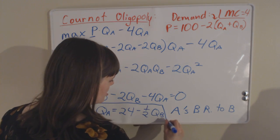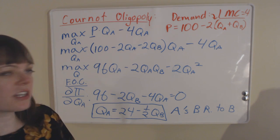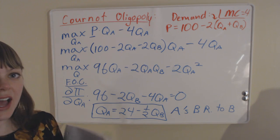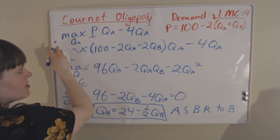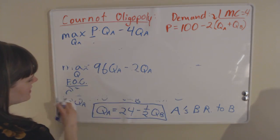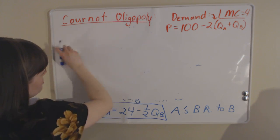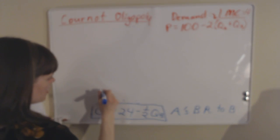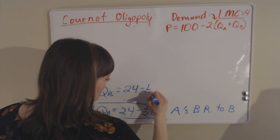Now that we have a best response function, let's remember that. For simultaneous moves, they don't know what each other are doing, so we can go ahead and solve firm B's maximization problem in exactly the same way. I'm sure you will not be surprised to figure out, since it's a symmetric problem, that firm B's best response function is going to be exactly the same as firm A's, except it's going to be backwards. So B's best response function is QB equals 24 minus 1 half QA.